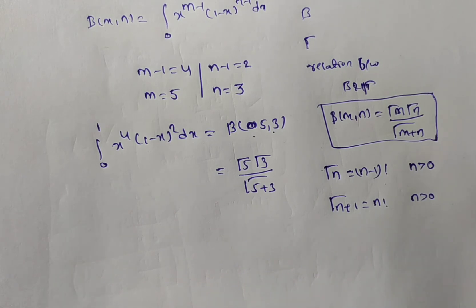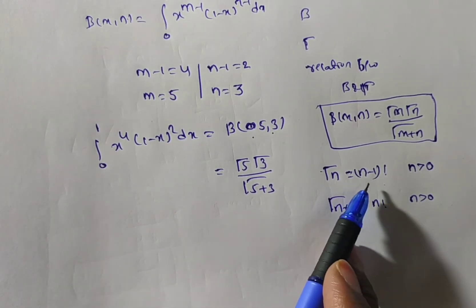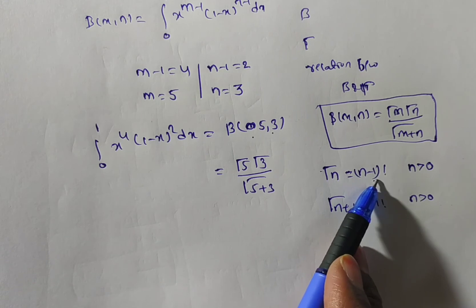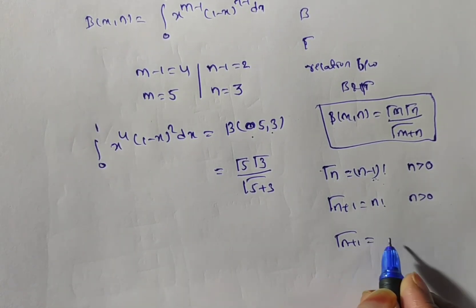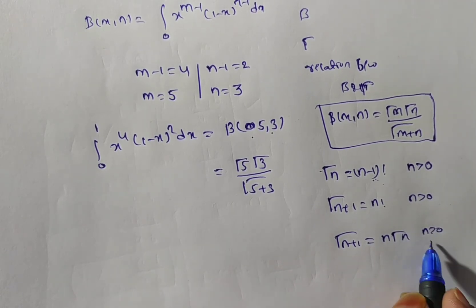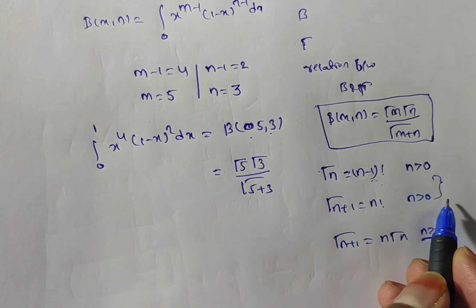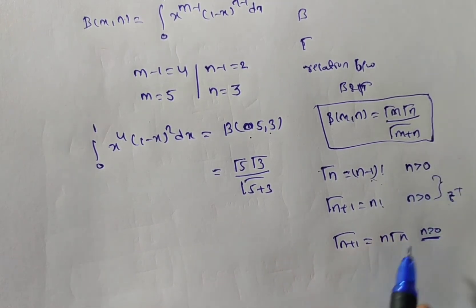In this case, it should be a factorial when we are writing, means if it is an integer only, integer case. Otherwise, gamma of n plus 1 is equal to n into gamma n for n greater than 0. Means for any positive value. But in this case, factorial when we will write, means if it is a positive integer.